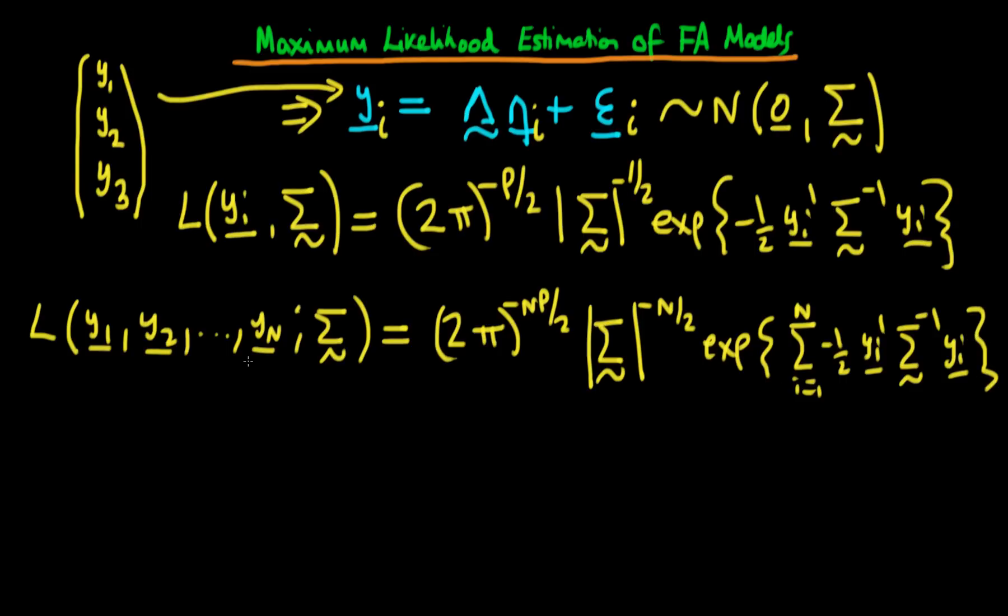So this represents the likelihood for all N individuals. What we'd like to do is maximize this likelihood over choice of sigma, because that's the thing which is unknown here. But in maximum likelihood, what we often prefer to do is maximize the log of the likelihood, because the log has nice properties, and it's a monotonic transformation, which means that if we maximize log likelihood, we've also maximized likelihood.